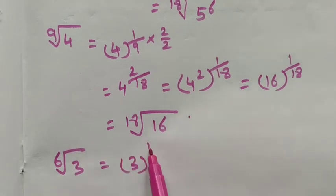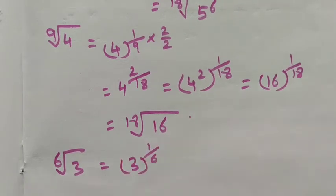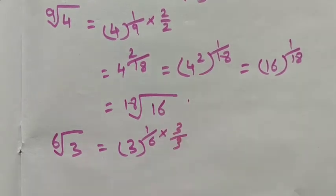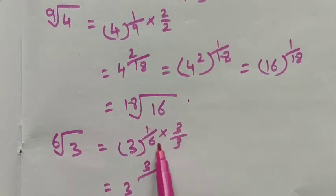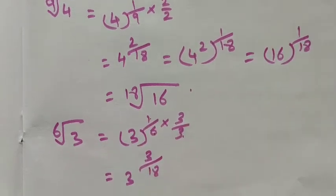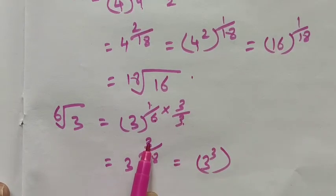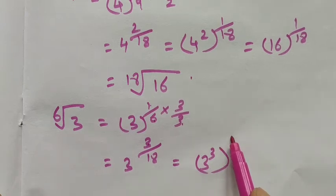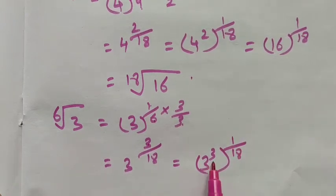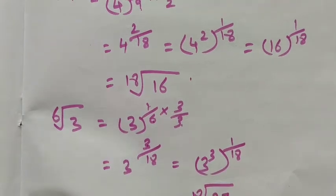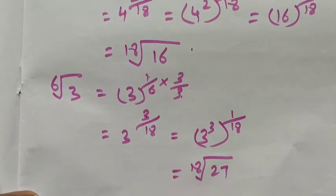The last term is 6th root of 3, which means 3 to the power 1 by 6. We multiply and divide by 3 to get the same denominator: 1 × 3 = 3 divided by 6 × 3 = 18. Taking the power inside: 3 to the power 3, whole to the power 1 by 18. This gives 27 to the power 1 by 18, so this is the 18th root of 27.